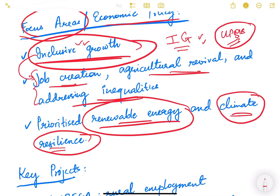By this time, the Sustainable Development Goals (SDGs) had emerged, and renewable energy and climate resilience were among them. India began incorporating these themes into national planning during the 11th plan period.